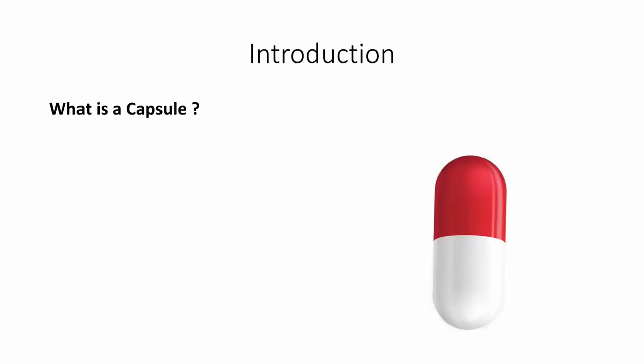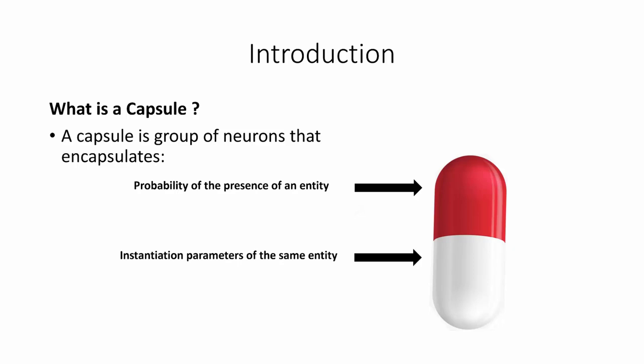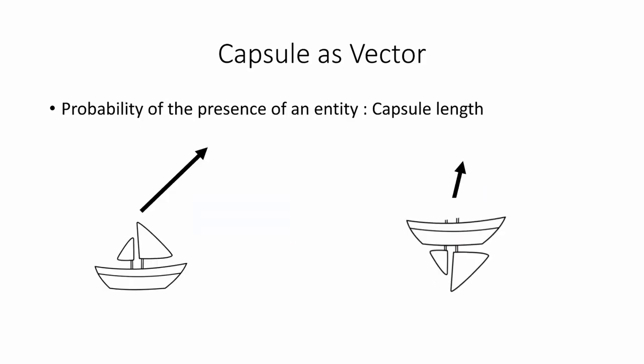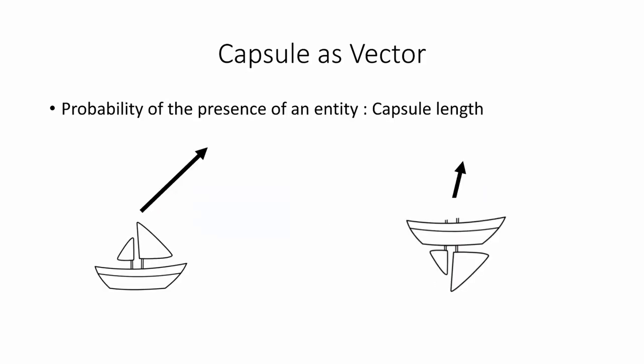Let's start with the definition of a capsule. By definition, a capsule is a group of neurons that encapsulate the probability of presence of an entity and also the instantiation parameters of the same entity. While a capsule can be represented in different ways, such as using a matrix, here we are interested in the special case where we represent a capsule using a vector. We follow the principle of separating the probability of presence of an entity from its instantiation parameters, and we use the capsule length to show our confidence level in detecting the presence of an entity.